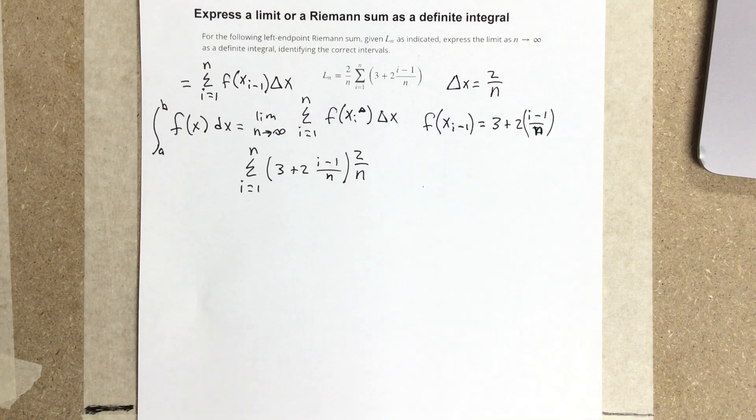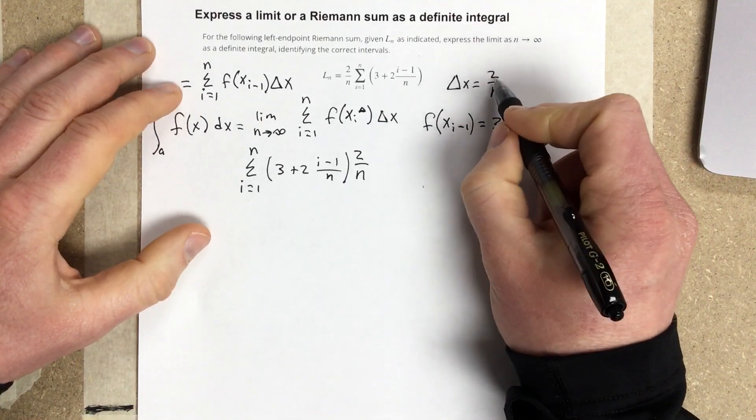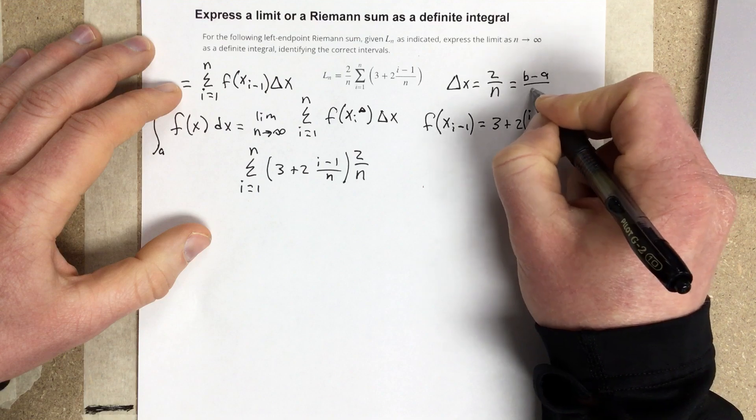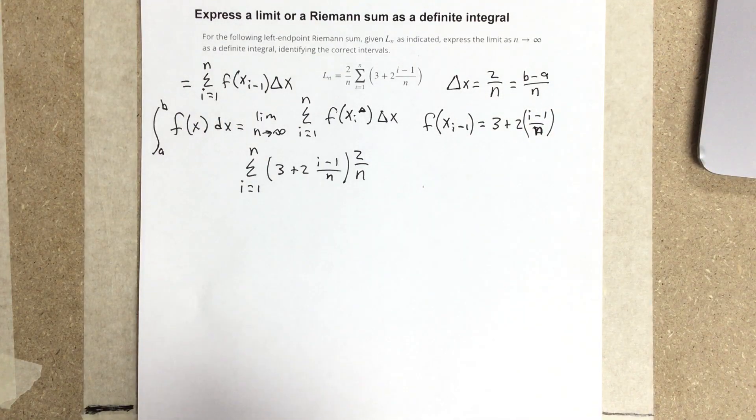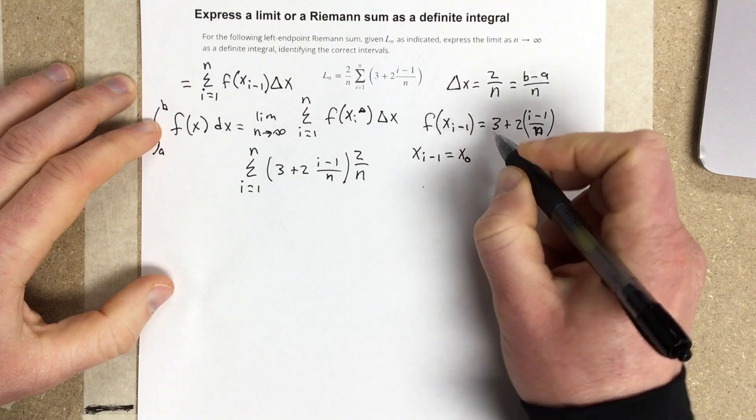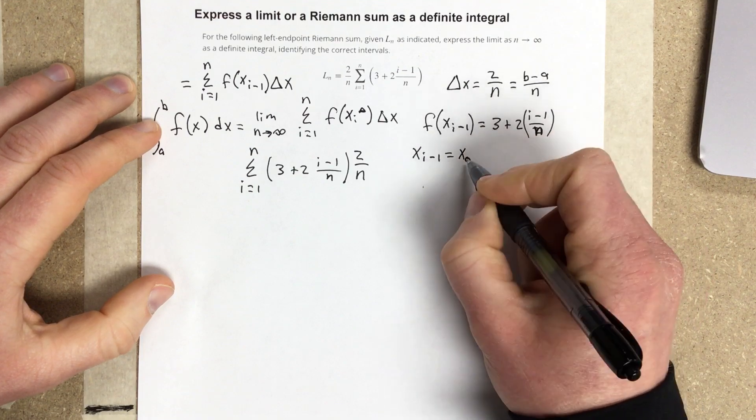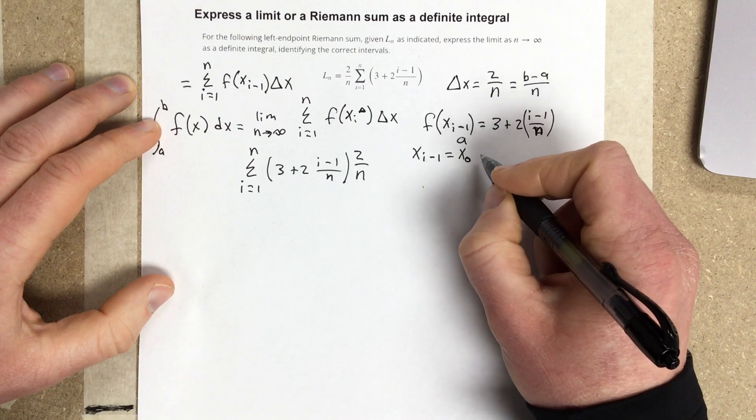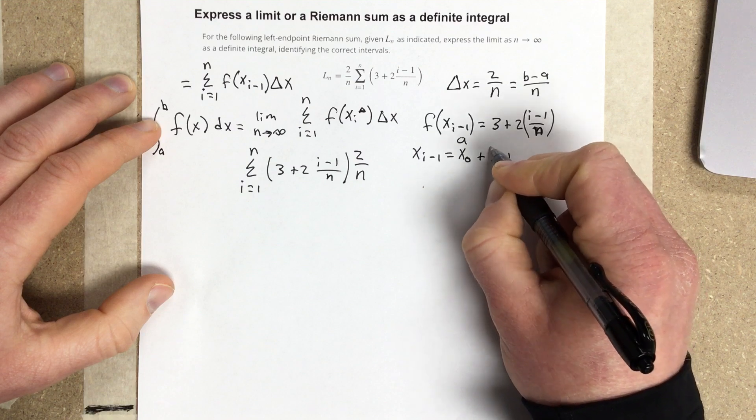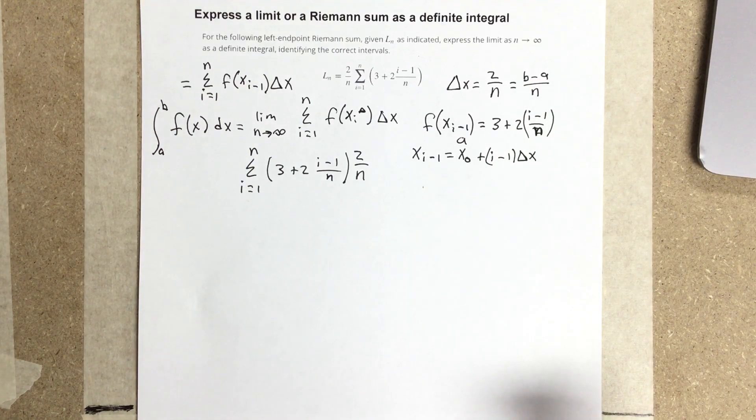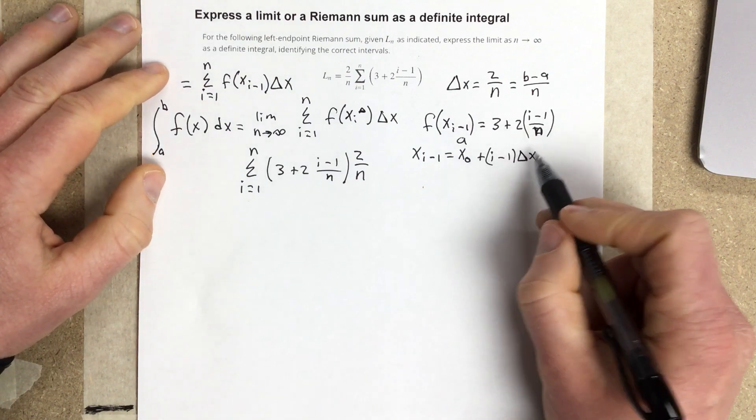So, then we're going to start piecing this all together. If change of x is equal to 2 over n, then that's really equal to b minus a over n. And we know that x_{i-1}, from previous things that we've done, x_{i-1} is actually equal to x_0 or a, plus (i-1) change of x.